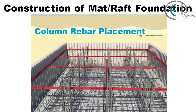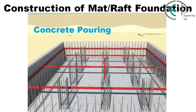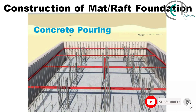Then it's time for vertical column rebar placement. When rebar placement is complete, we are ready for formwork or shutter placement. Now we can pour concrete inside the formwork. After 24 hours, or when the concrete hardens, we remove the formwork and perform curing. This is how we construct a mat or raft foundation.